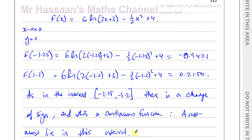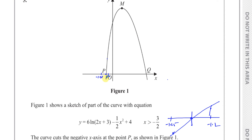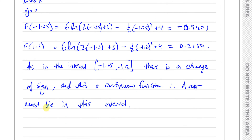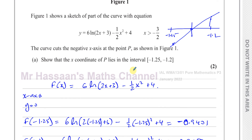A statement like that — they're looking for the words 'change of sign, therefore a root lies in the interval.' You have to show that one value is positive and one is negative. Because there is a change of sign in this interval, when you substitute into f(x), you end up with a root lying between those values. That's the answer for part 5A.